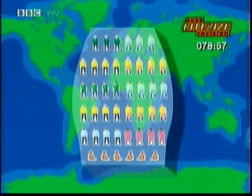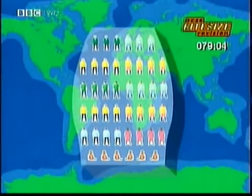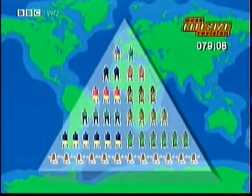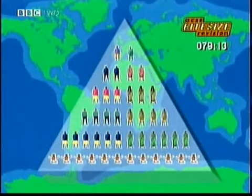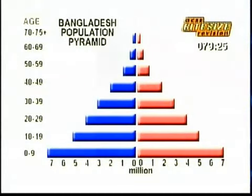Population pyramids for MEDCs and LEDCs produce distinctive shapes that you need to remember. Here's the population pyramid for an LEDC — it lives up to its name and just like a pyramid it has a very triangular shape. Here's what you are more likely to see in an exam: this is for Bangladesh, an LEDC. It shows a high birth rate, high infant mortality, and low life expectancy — all typical for an LEDC.